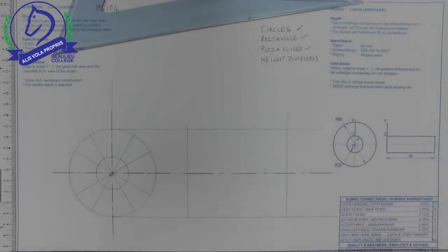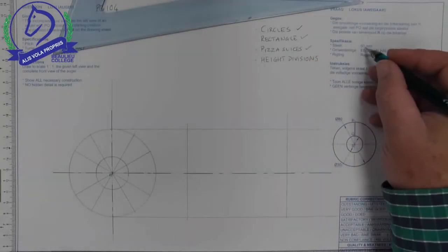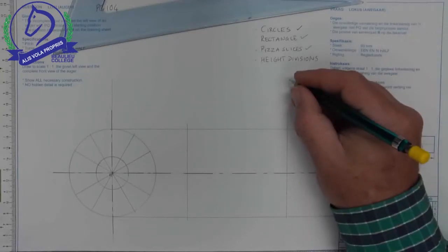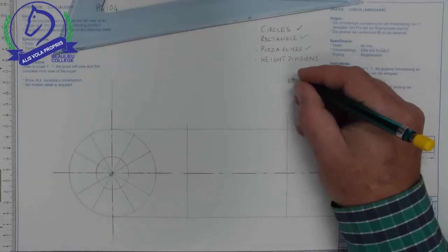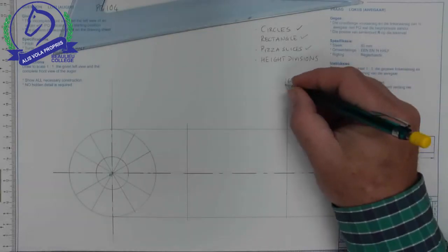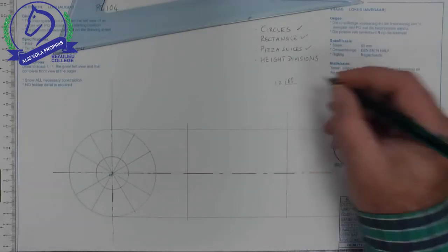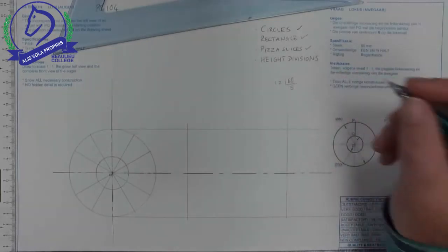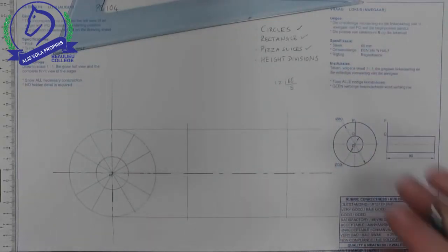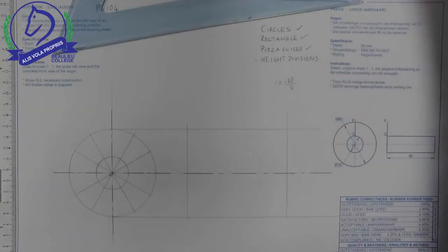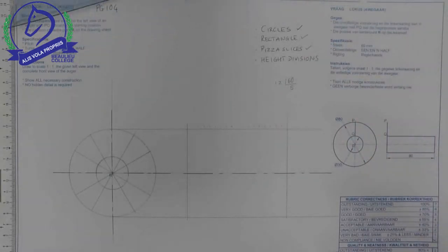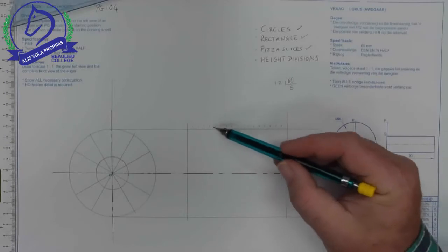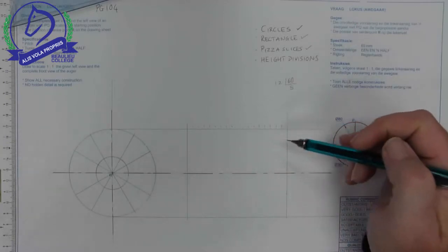Now I need to mark off my height divisions. What do we need to remember? That the length was 60 for one turn, which if we divide that by our 12 segments gives us a measurement of 5 millimeters. So I'm going to mark off those 5 millimeter measurements now. There I have marked off my length divisions.